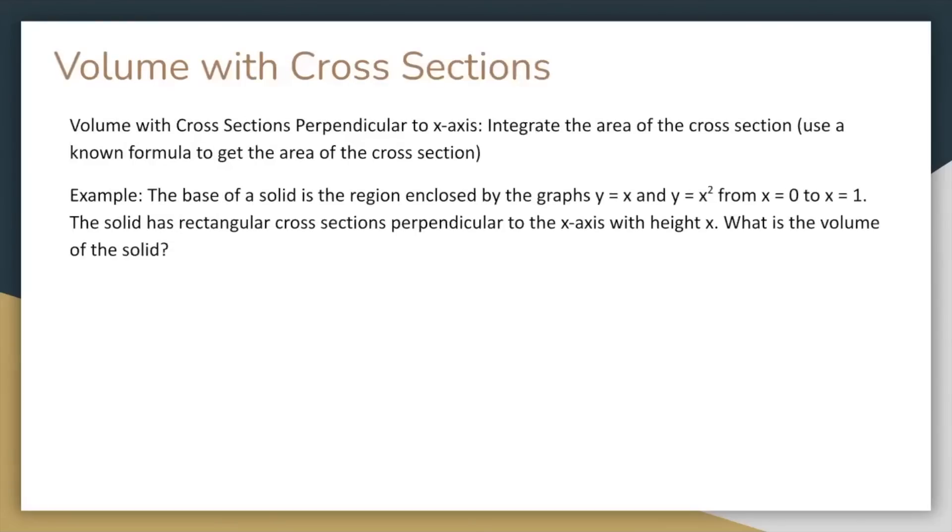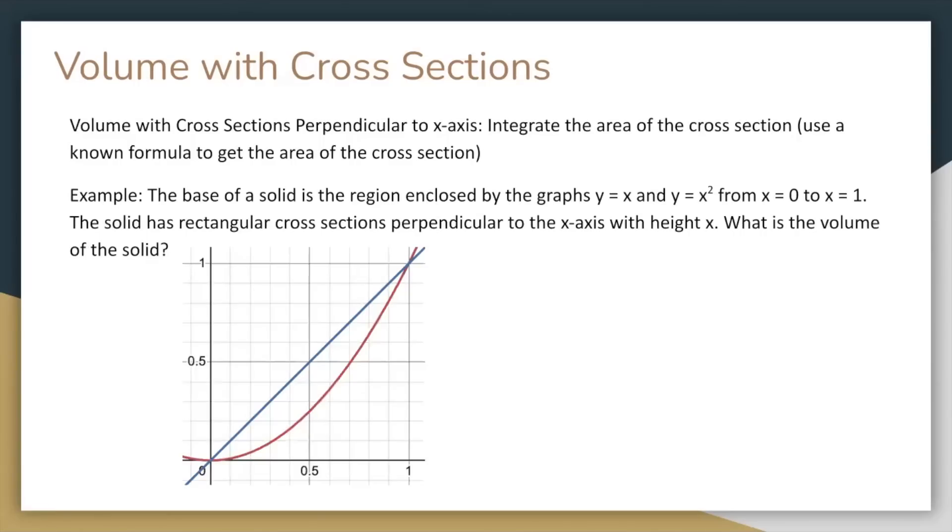Now into evaluating volume. This tends to be one of the more difficult topics in the course, but it's much easier if you see what's going on. Here's an example. The base of a solid is the region enclosed by the graphs y equals x and y equals x squared from x equals 0 to x equals 1. The solid has rectangular cross sections perpendicular to the x-axis with height h. What is the volume of the solid? Well, let's visualize this. Here are the graphs of the functions. And at a particular x value, such as 0.5, the cross section is a rectangle with base equal to the distance between the two curves and height equal to x. We know the area of a rectangle is base times height, so if we just integrate this area formula from 0 to 1, we get the total volume, which in this case is 1 twelfth.